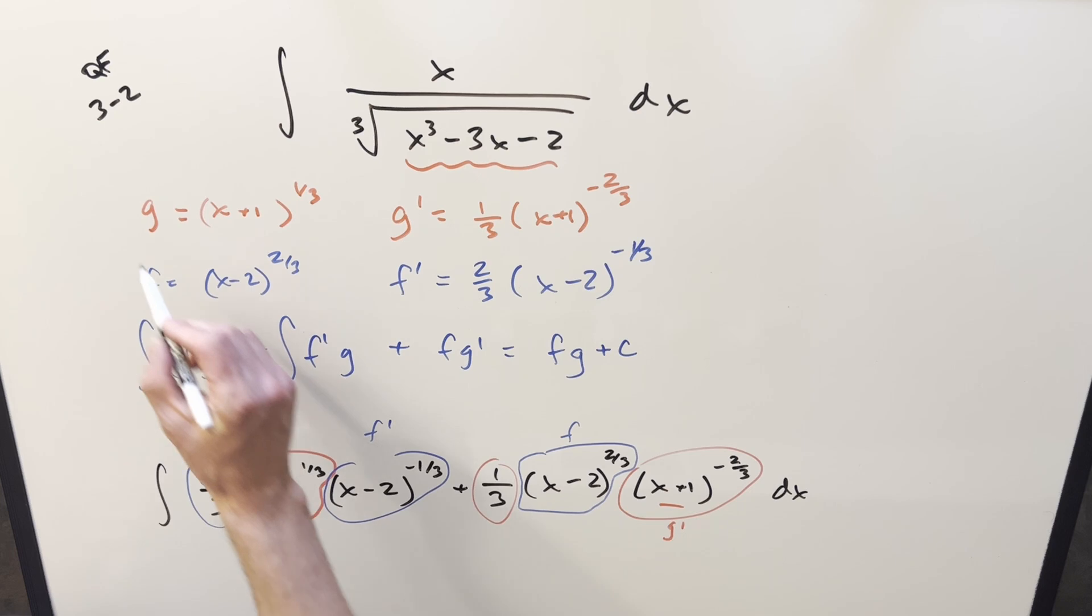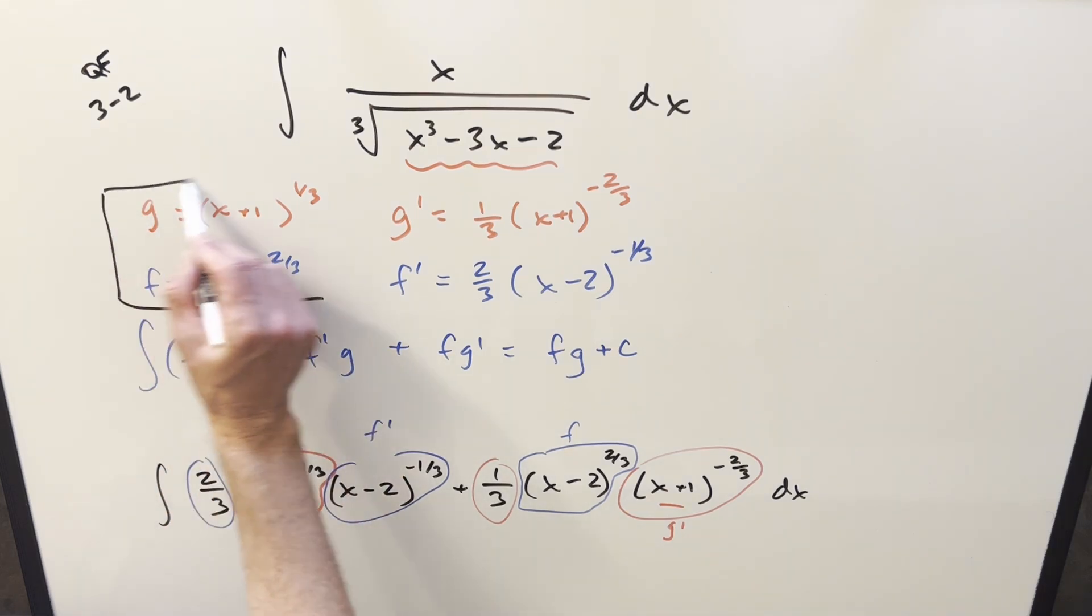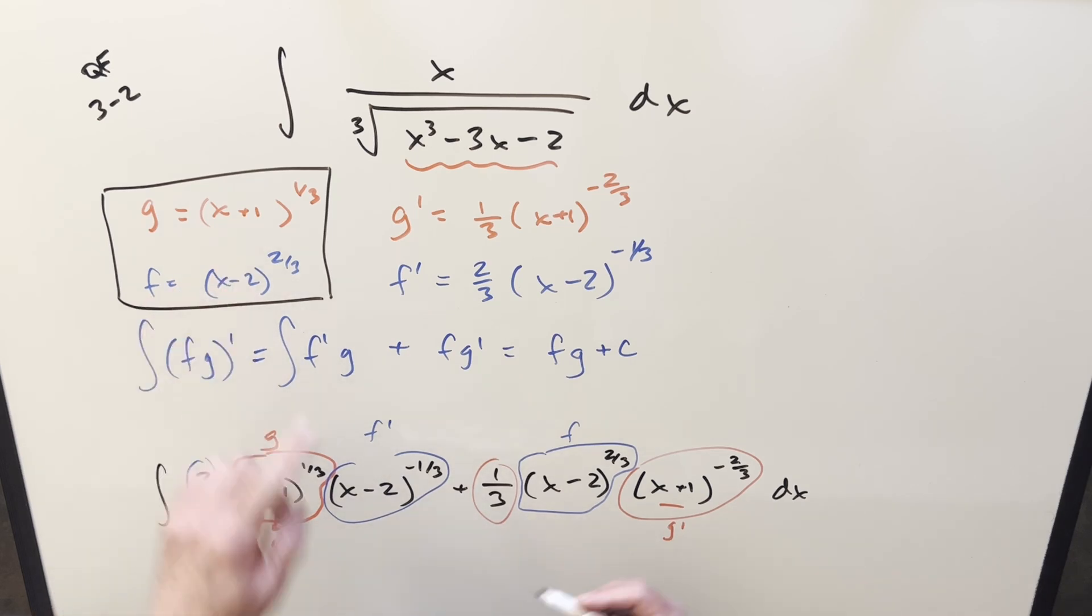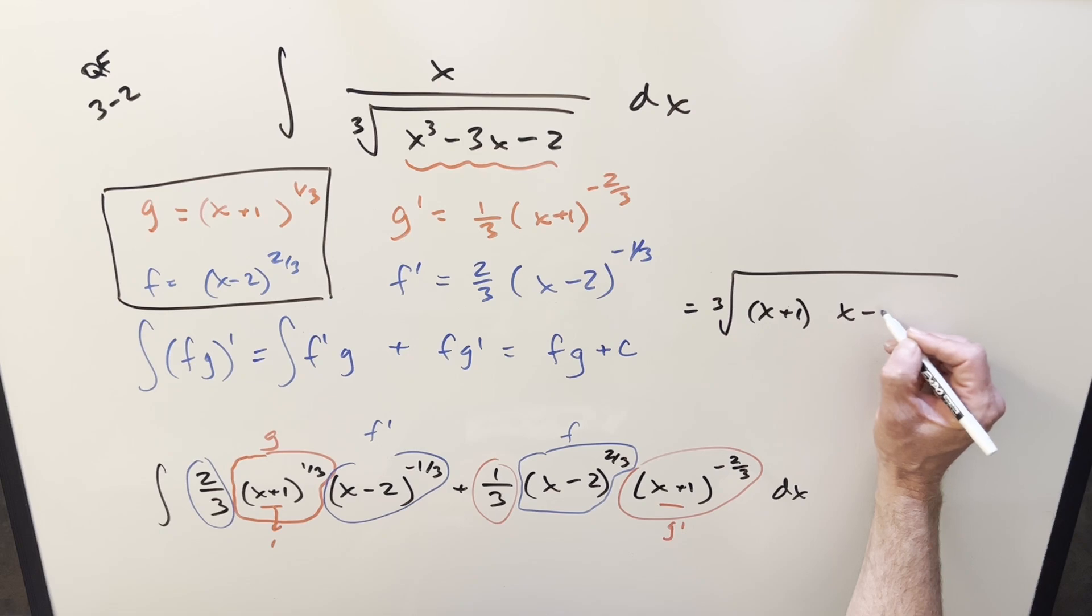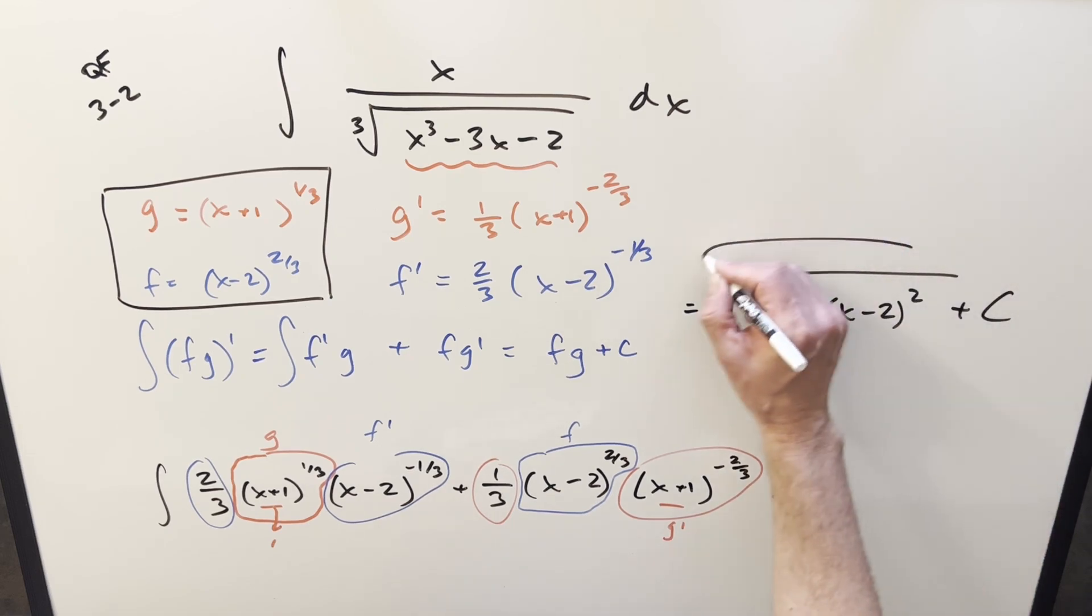So really all that's left is we just need to grab our f and g and put that into a solution. One thing I can do is we can bring the cube root back into it. So like for the solution on this, we can write it, I'll write it all under a big cube root. This here will just become x plus 1. This over here will be x minus 2 all squared, add a plus c, and that's it.